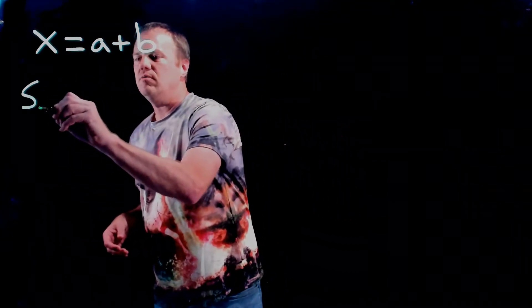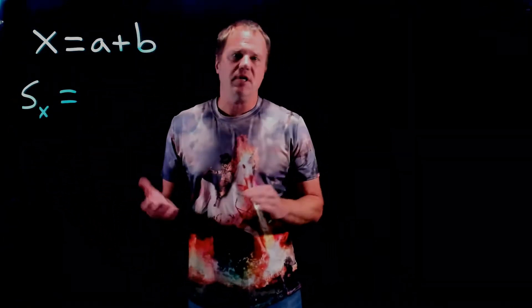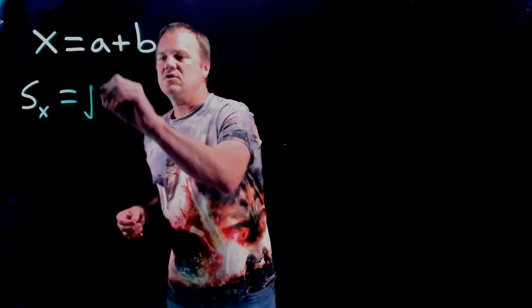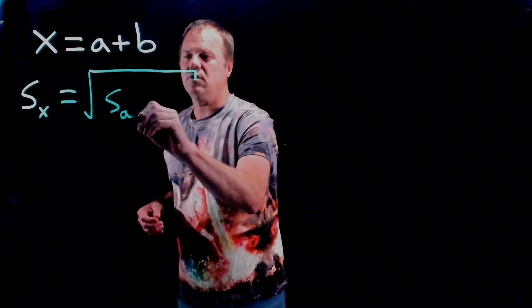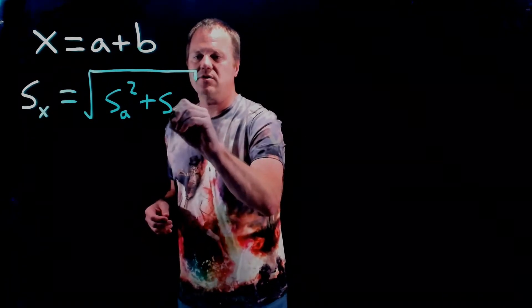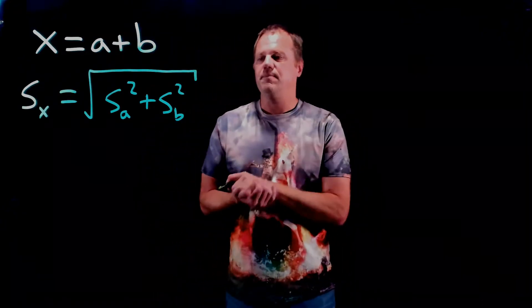the rule is that the uncertainty - this symbol right here just means the uncertainty in the value x - is just the square root of the sum of the squares of the individual uncertainties. So s sub a is uncertainty in a, and s subscript b is the uncertainty in b.